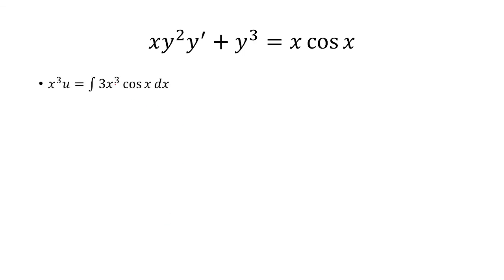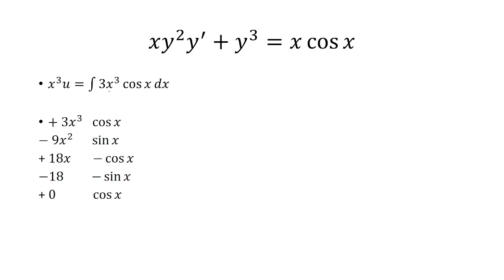Now I just need to integrate this, and I'm going to use tabular integration. Starting off with 3x cubed on the left column, I alternate signs: positive, negative, positive, negative — stopping when I reach 0. On the right column I start with cosine and find successive antiderivatives, stopping when I'm in the same row as 0.